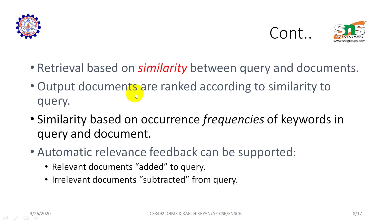Retrieval is based on similarity between the query and the document. Output documents are ranked according to similarity with the query. The similarity is based on the occurrence frequency of the keywords in the query and the document. Automatic relevance feedback can be supported by adding to or removing terms from the query.